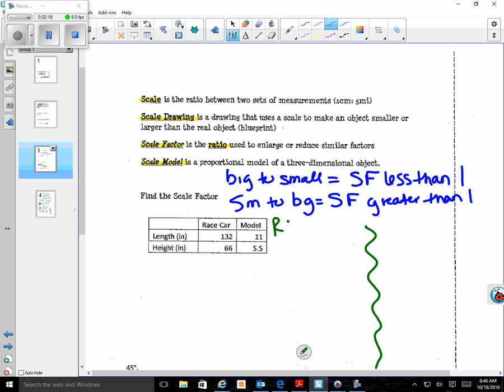If I'm going from a race car to my model, I'm going from big to small. Whenever we do scale factor, something good to remember is new over old, because a lot of the times you're going to be asked to find the scale factor and the only way to do that is to use the two numbers that they give you. So if I'm going to a model, my model is new, so I'm going to use the length right here. It doesn't matter if you use the length or the height, you're going to get the same answer.